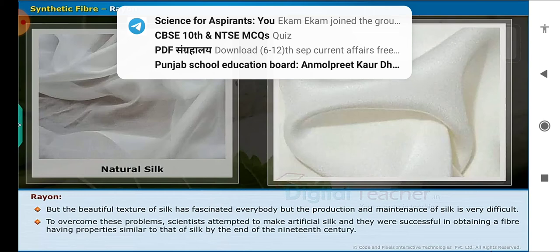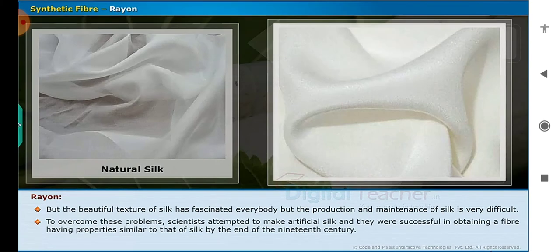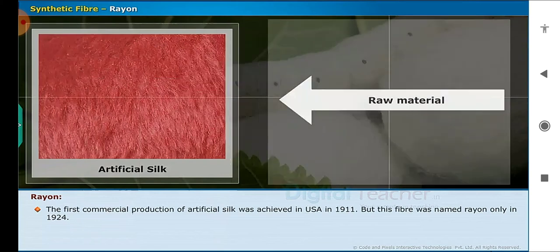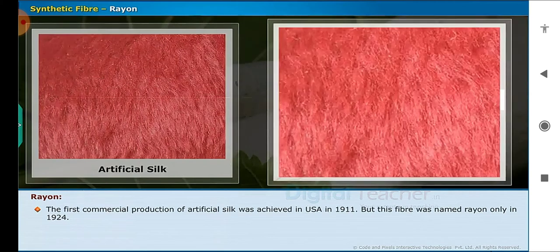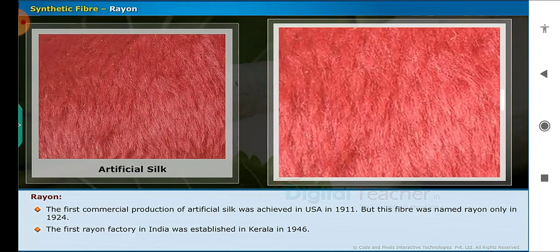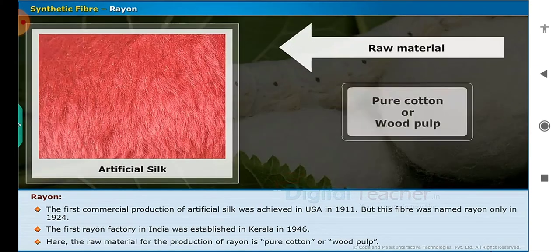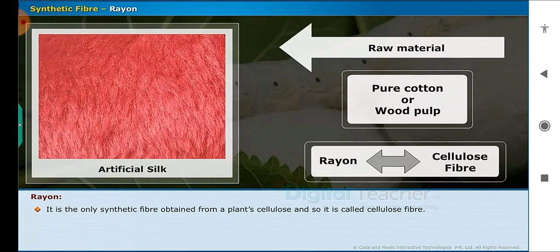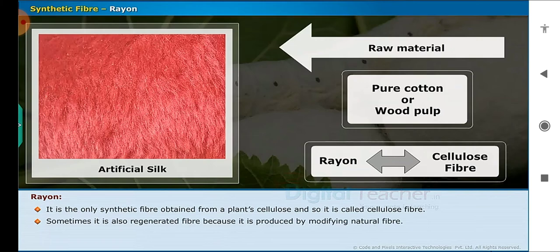To overcome these problems, scientists attempted to make artificial silk and were successful in obtaining a fiber with properties similar to silk by the end of the 19th century. The first commercial production of artificial silk was achieved in the USA in 1911, but this fiber was named rayon only in 1924. The first rayon factory in India was established in Kerala in 1946. The raw material for the production of rayon is pure cotton or wood pulp. It is the only synthetic fiber obtained from a plant's cellulose, and so it is called a cellulose fiber. Sometimes it is also called regenerated fiber because it is produced by modifying natural fiber.